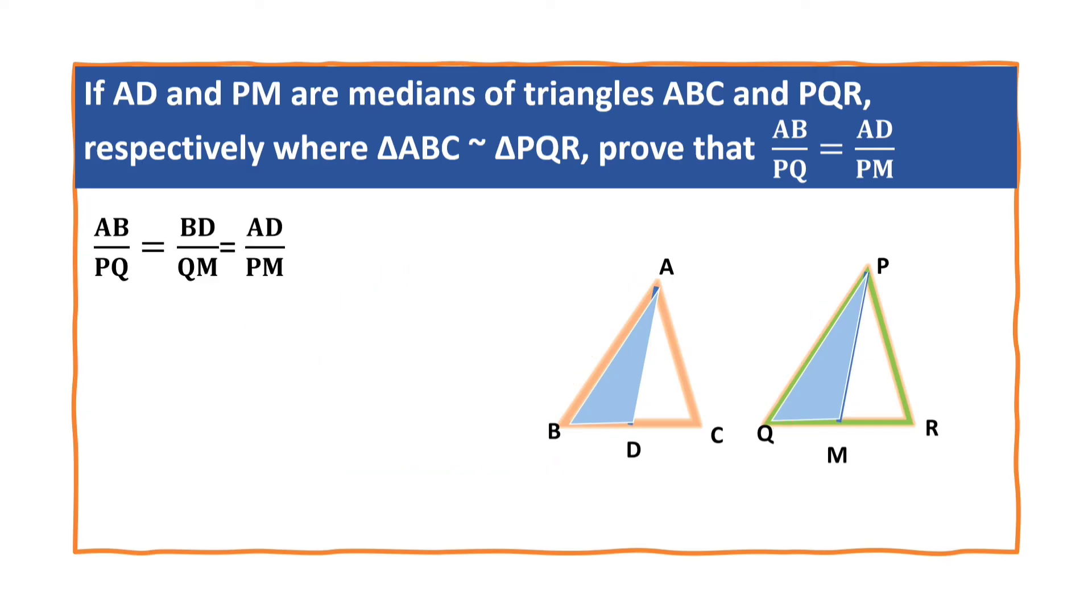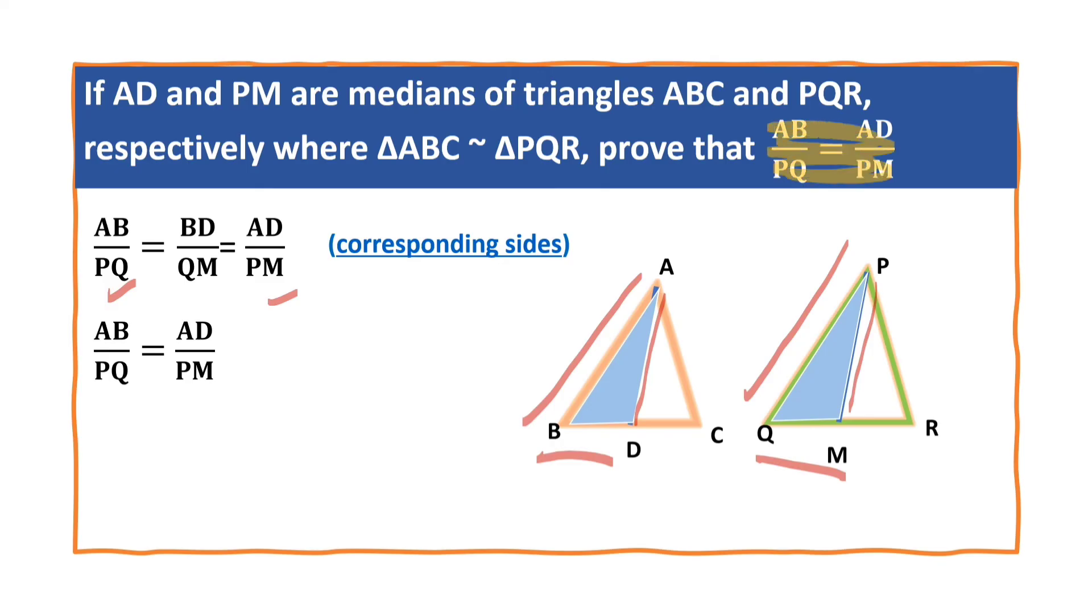Now we can write that AB by PQ is equal to BD by QM from 2, and also this is equal to AD by PM. Why? They are the corresponding sides of the similar triangles ABD and PQM. So now let us take only these two: AB by PQ equals AD by PM. This is the result we wanted to prove. Hence proved.